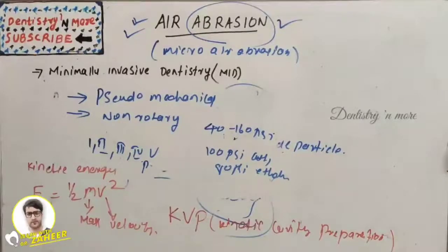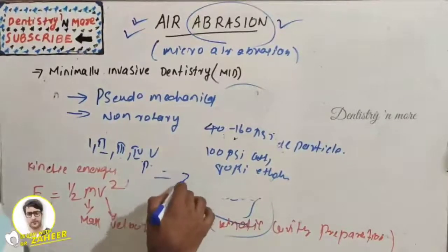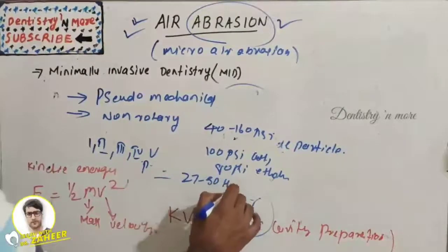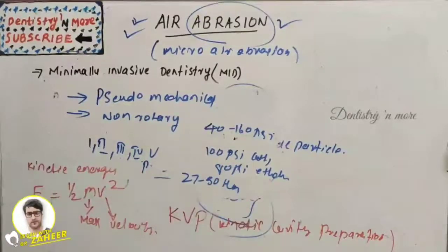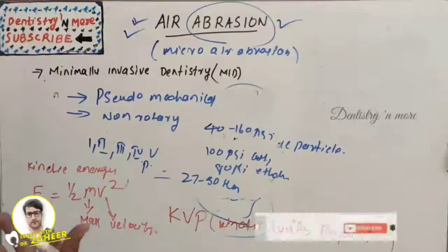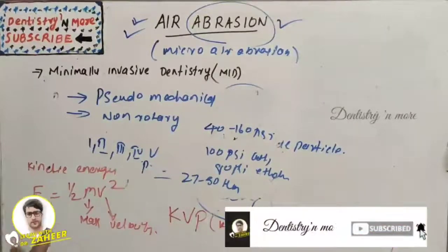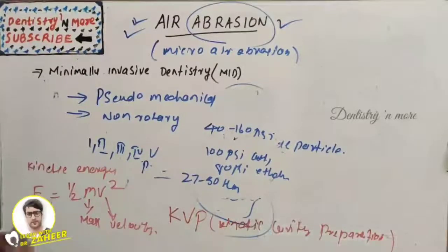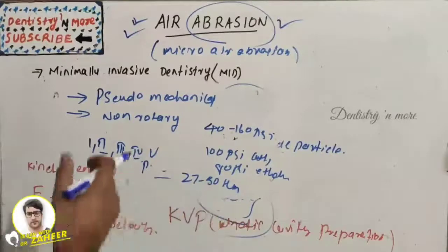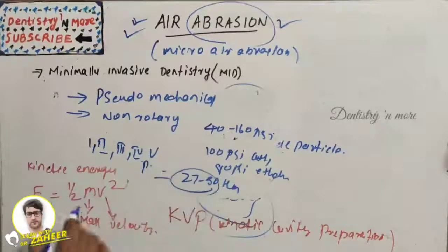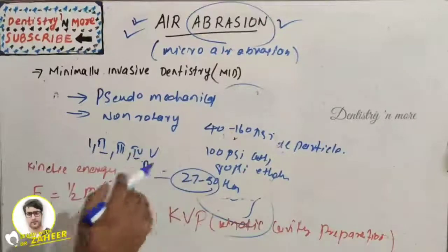The particle size - common particle size is 27 to 50 micrometers, that is aluminum particle size. Higher particle flow rate will allow more particles to operate the working surface faster, so the abrasion depends on the particle size.